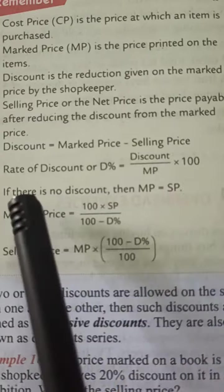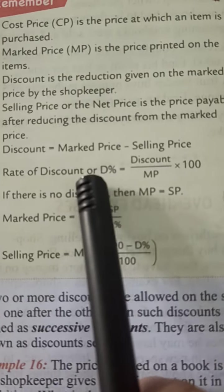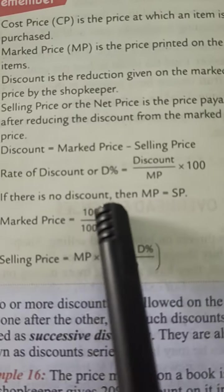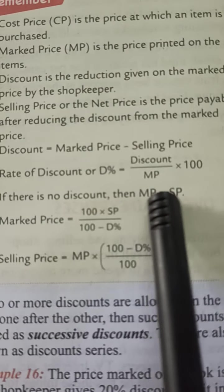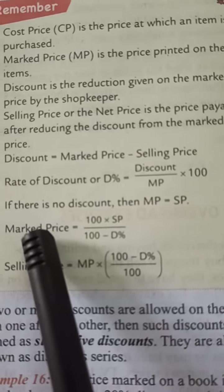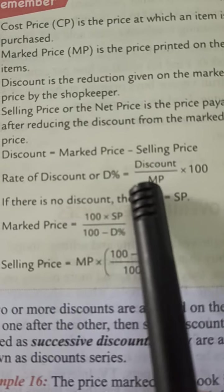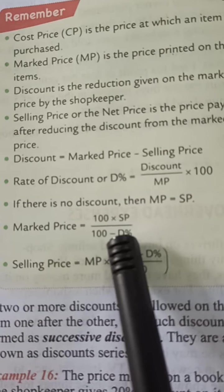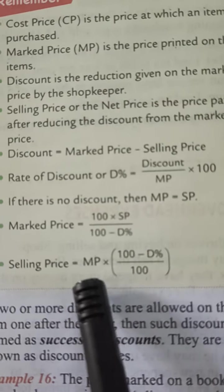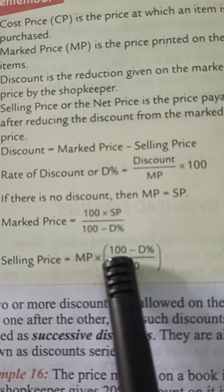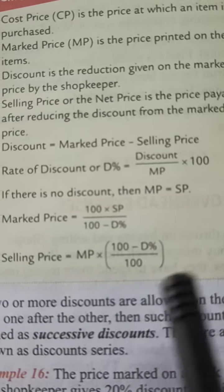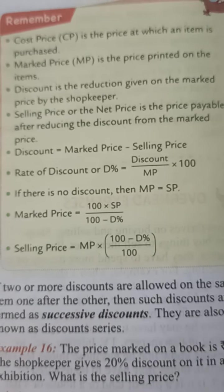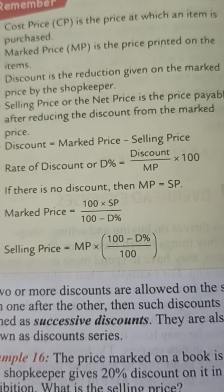Discount equals mark price minus selling price. The rate of discount or discount percent equals discount divided by mark price, multiplied by 100. If there is no discount, then mark price and selling price will be the same. Selling price equals mark price multiplied by (100 minus discount percent), divided by 100. These formulas you have to remember while solving this exercise.